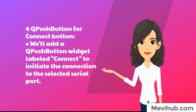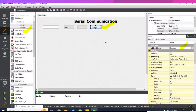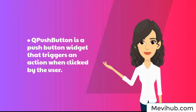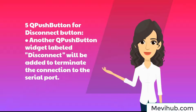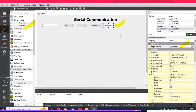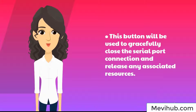Step 4: QPushButton for Connect Button. We'll add a QPushButton widget labeled 'Connect' to initiate the connection to the selected serial port. QPushButton is a push button widget that triggers an action when clicked by the user. Step 5: QPushButton for Disconnect Button. Another QPushButton widget labeled 'Disconnect' will be added to terminate the connection to the serial port. This button will be used to gracefully close the serial port connection and release any associated resources.